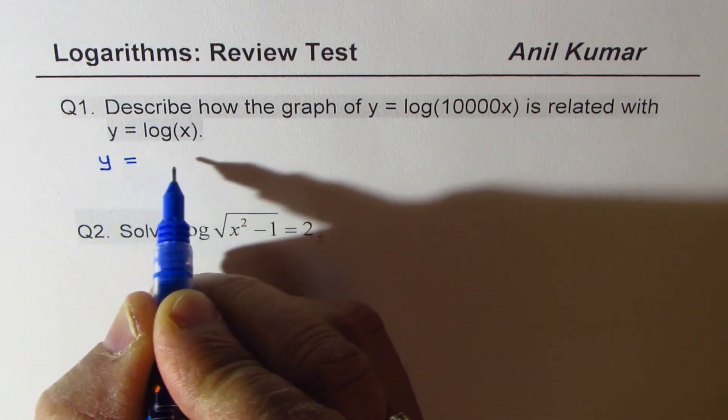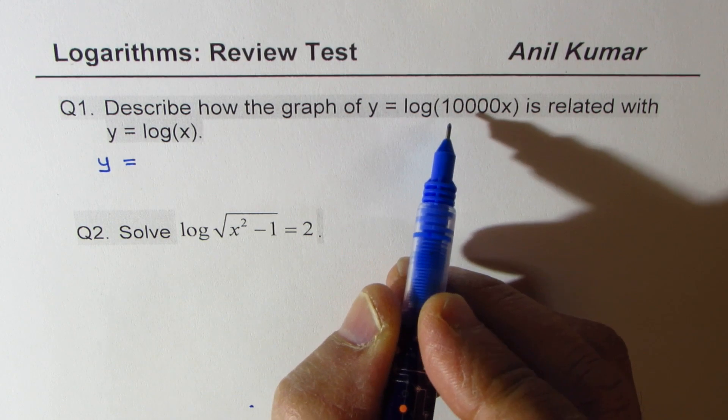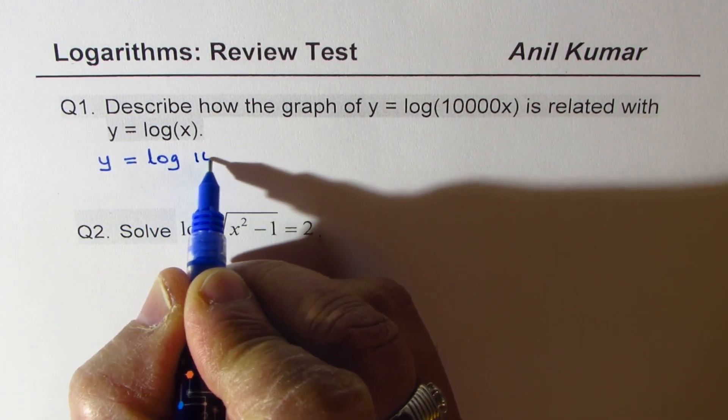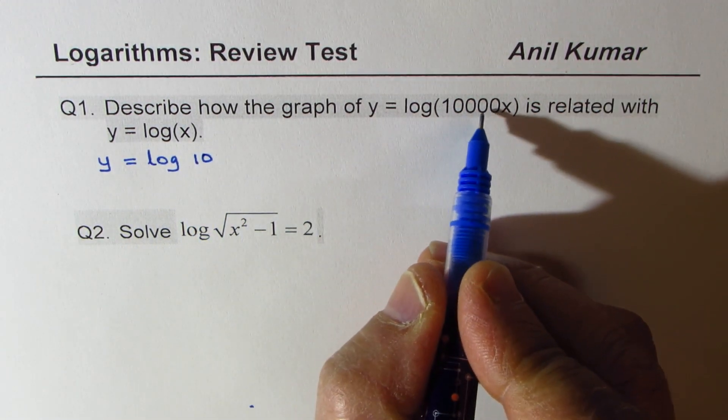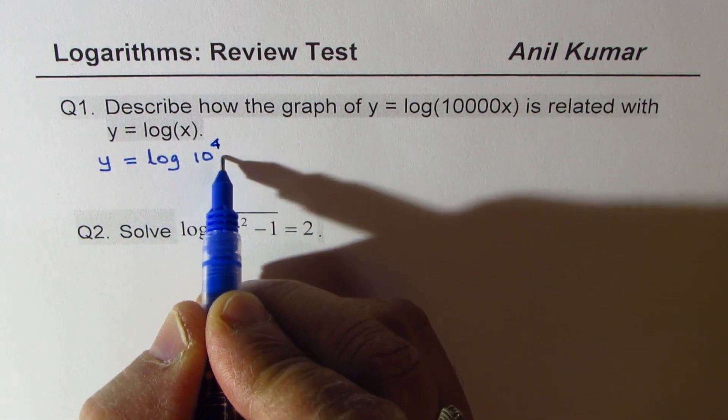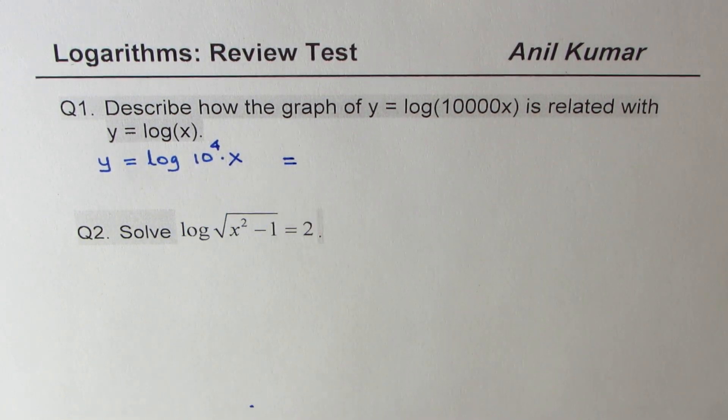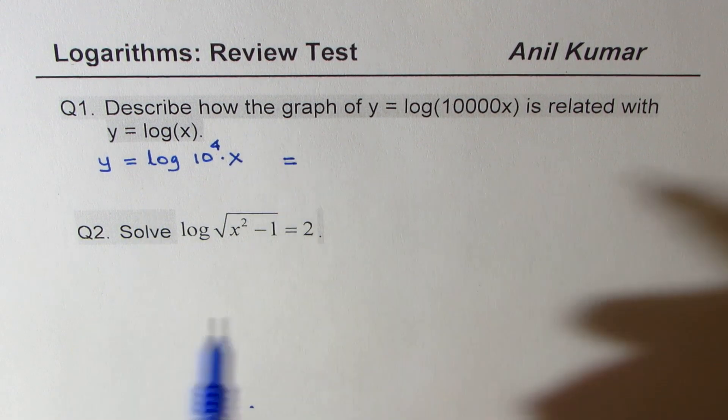Let's solve the first one. We are given y equals log of 10,000x. Now there are four zeros, ten thousand, which we can write as log of 10 to the power of 4 times x.